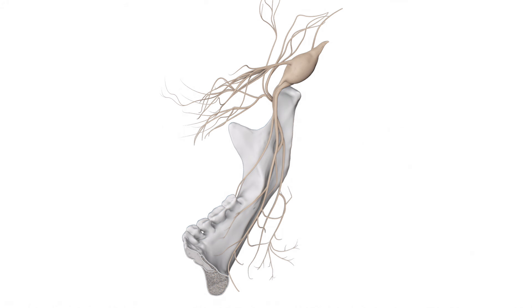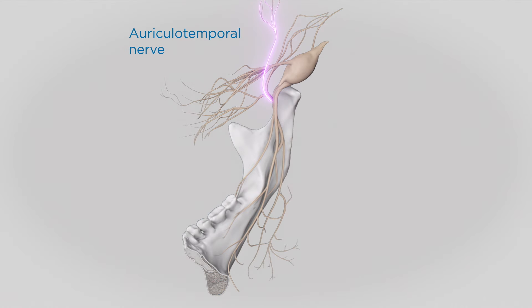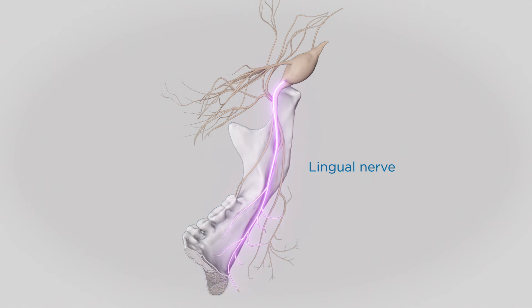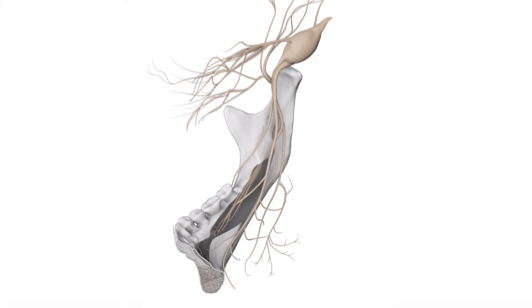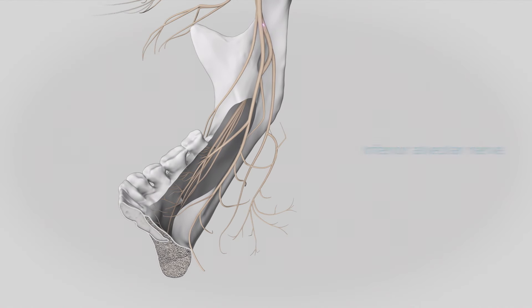As it descends, the posterior root divides into three branches. The auriculotemporal nerve supplies the skin of the temporal region of the head. The lingual nerve provides general sensation for all of the lingual gingiva, the mucosa of the floor of the mouth, and the anterior two-thirds of the tongue. In combination with the chorda tympani branch of the facial nerve, the lingual nerve also carries parasympathetic innervation to the submaxillary and sublingual glands and taste fibers to the tongue. The third branch, the inferior alveolar nerve, passes through the mandibular foramen to enter the mandibular canal, giving off branches to the teeth and surrounding alveolar bone.